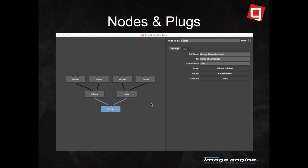Pretty much everything in Gaffer is a node or a plug. In this example, we're just using Gaffer to visualize some information — the nodes don't compute anything, and the connections don't imply data transfer. It's just a convenient way to visualize the line of succession of the British throne. Nodes can be implemented in C++ or Python, but Python is terrible for anything performance critical, so in practice we tend to implement everything in C++ and use Python for UI and glue code.